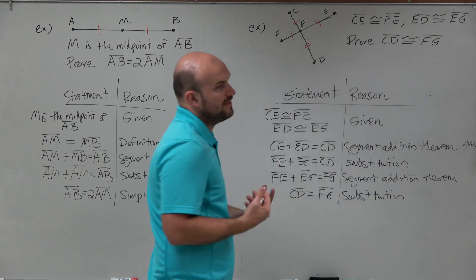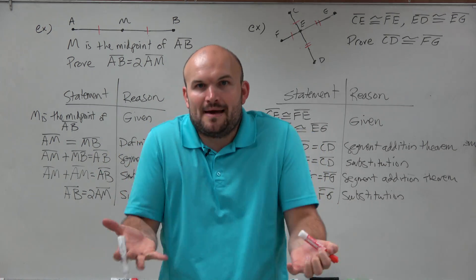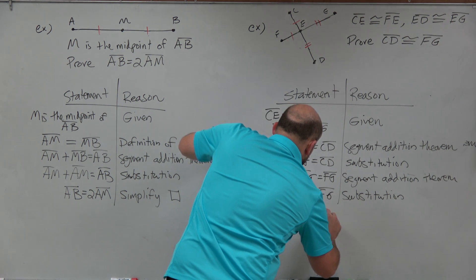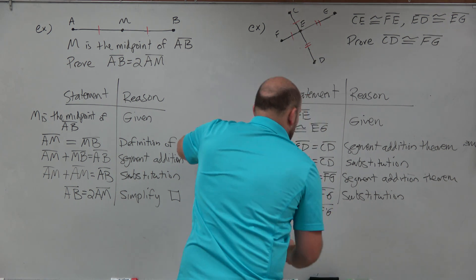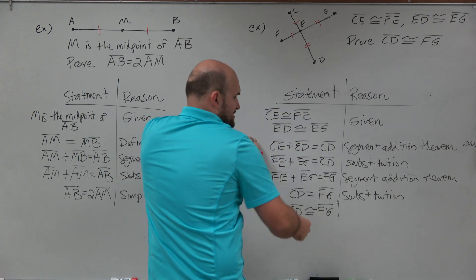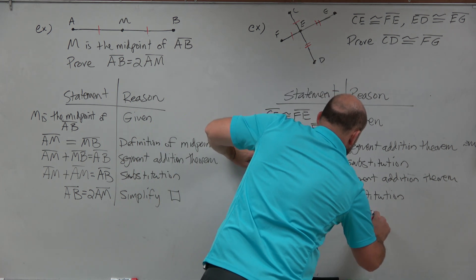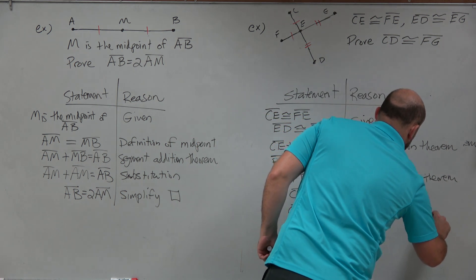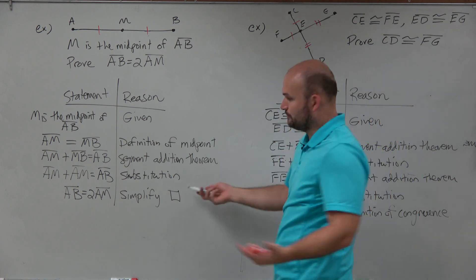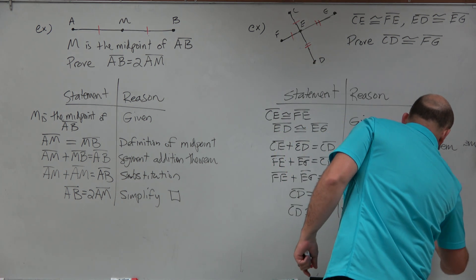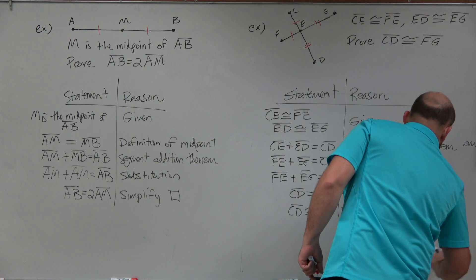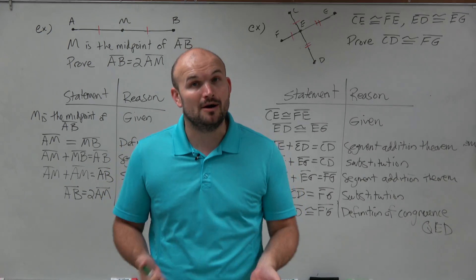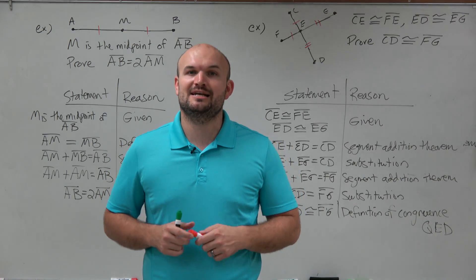Now, they want to show that they are congruent. Well, if things are equal in measure, that means they're congruent. So I'm just going to rewrite this as CD is congruent to FG. Because since they're equal in measure, that means they're congruent. So I'm just going to say the definition of congruence. And when you're finished with your proof, you can use a nice little box. Or you can also just write QED. So there you go, ladies and gentlemen. That is how you write a two-column proof using segment addition theorem. Thanks.